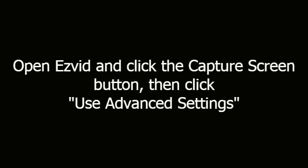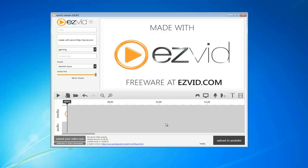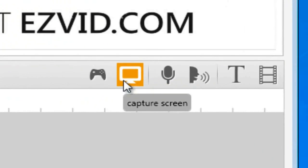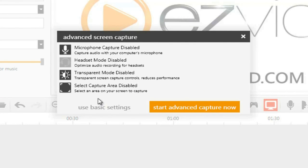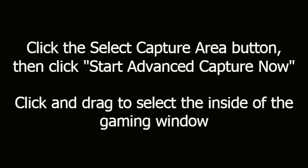Open EasyVid and click the Capture Screen button, then click Use Advanced Settings. Click the Select Capture Area button, then click Start Advanced Capture Now. Click and drag to select the inside of the gaming window.